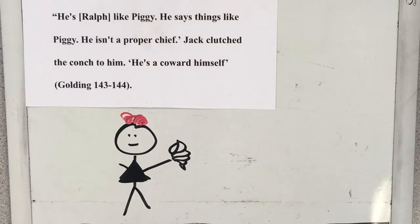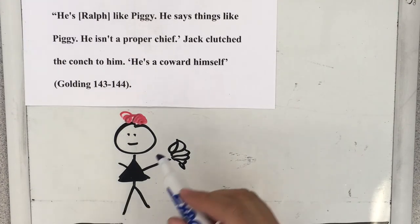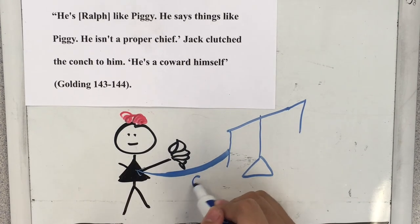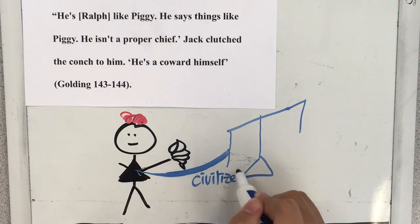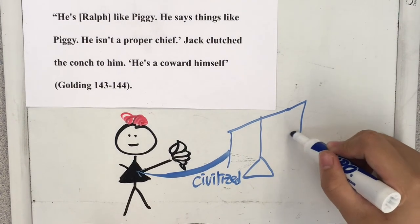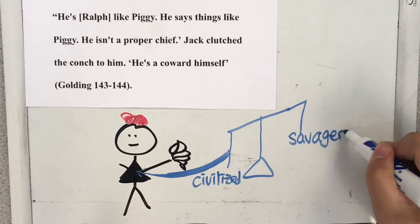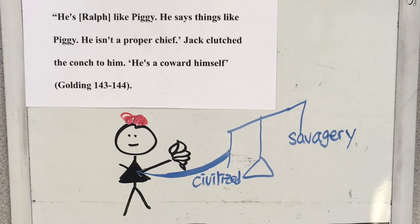Aside from the symbols, Golding uses Jack's character development to demonstrate the theme. At the beginning of the book, during an argument between Jack and Ralph, Ralph's like Piggy. He says things like Piggy. He isn't a proper chief. Jack clutched the conch to him. He's a coward himself. When Jack clutches the conch, it demonstrates that he still has respect for the rules.